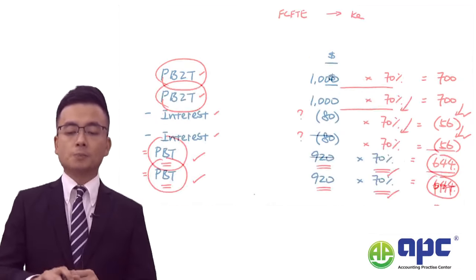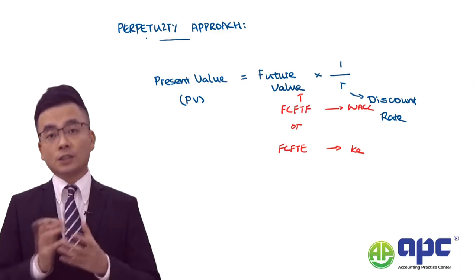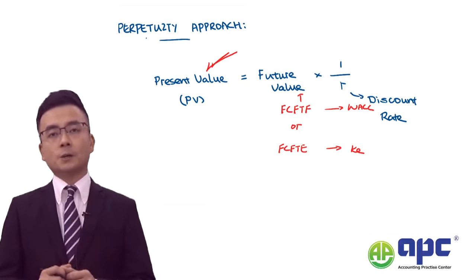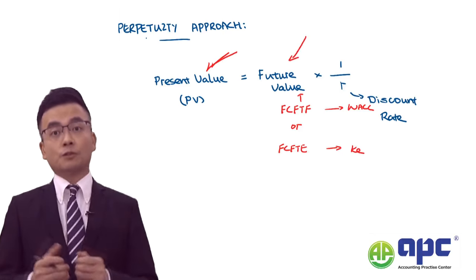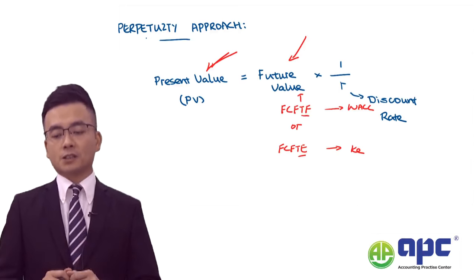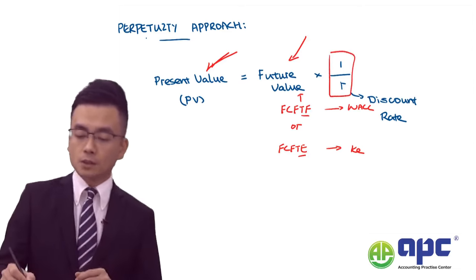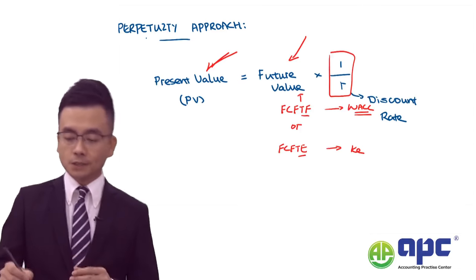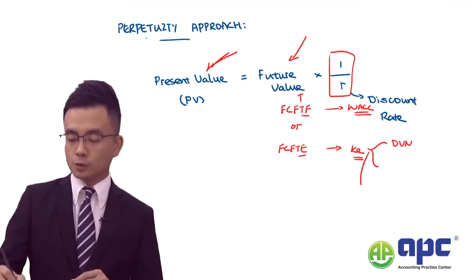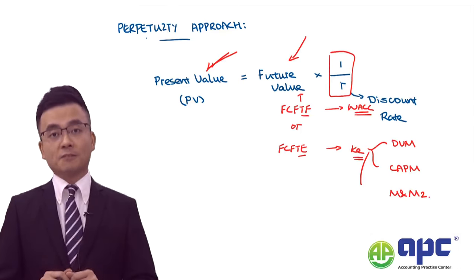When valuing a business using the free cash flow methodology, we use the perpetuity approach — assuming cash flows continue forever. To calculate the present value, we take the future cash flows (either to firm or to equity) divided by the discount rate — the perpetuity factor (1 / discount rate). Using FCFF, the discount rate is WACC; using FCFE, the discount rate is the cost of equity, which can be calculated using the dividend valuation model, the CAPM formula, or the M&M Proposition II — all three are provided in the AFM exam.